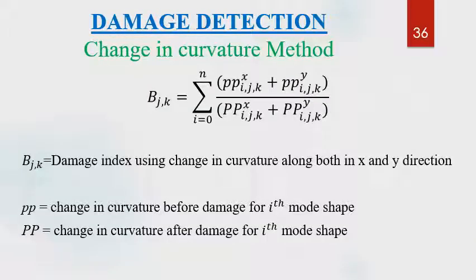Damage location was detected using the change in curvature method by calculating the damage index value for each element. The damage index can be calculated using the formula where small pp is the change in curvature before damage for the ith mode shape, whereas capital PP is the change in curvature after damage for the ith mode shape. The element having the maximum value of damage index will be identified as the damaged element.